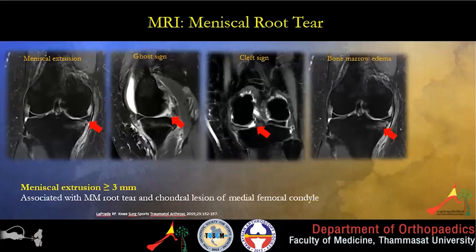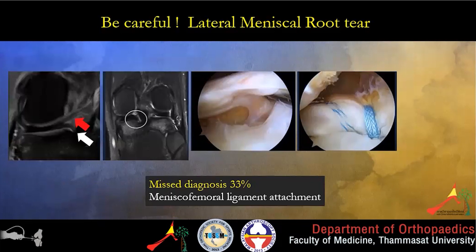The MRI characteristics of meniscus root tear include: meniscus extrusion of more than or equal to 3 mm from the edge of the tibial plateau; the ghost sign, defined by the meniscus disappearing and then reappearing on consecutive sagittal sequences; the cleft sign; and bone marrow edema. Be careful with lateral meniscus root tear, as there is a 33% misdiagnosis rate on MRI due to the meniscofemoral ligament attachment.